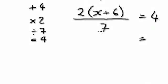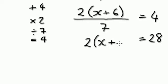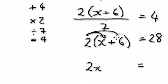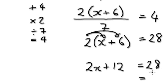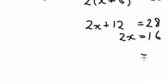So let's tidy up and solve. Multiply both sides by 7, giving 28 on the right. What's left is whatever is on top. Multiply out: this gives 2x, and 2 times 6 is 12, so 2x plus 12 equals 28. Take away 12 from both sides, giving 2x equals 16. Divide both sides by 2, so x equals 8.